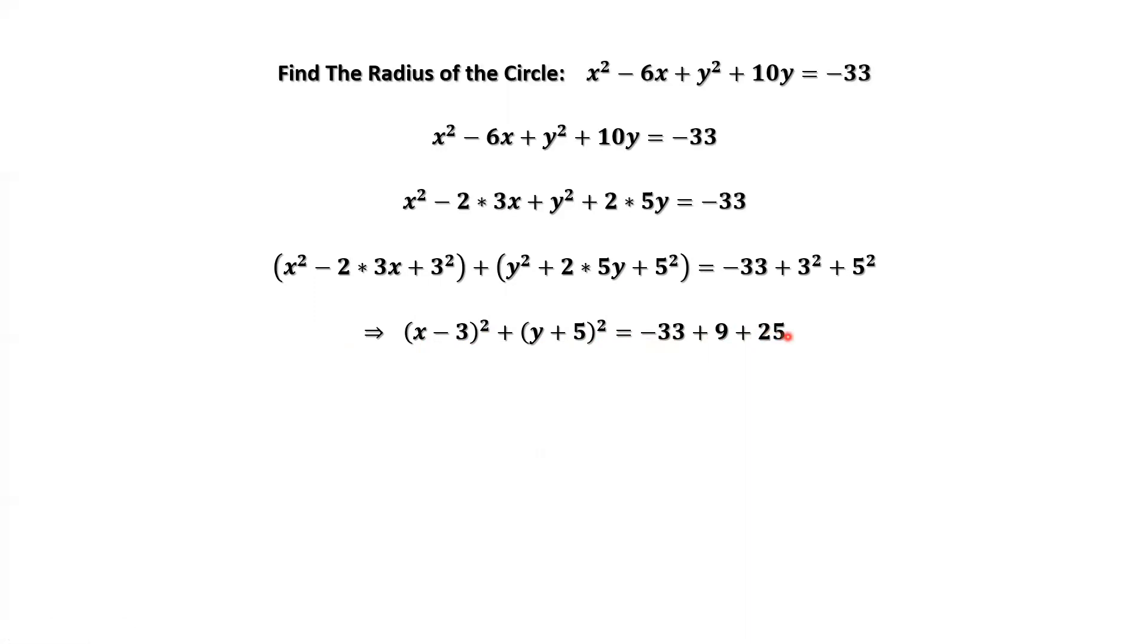Continue to simplify the right-hand side. Then we have x minus 3 squared plus y minus negative 5 squared equals 1 squared. This is the standard form for a circle.